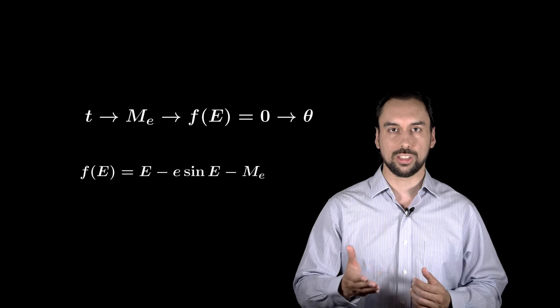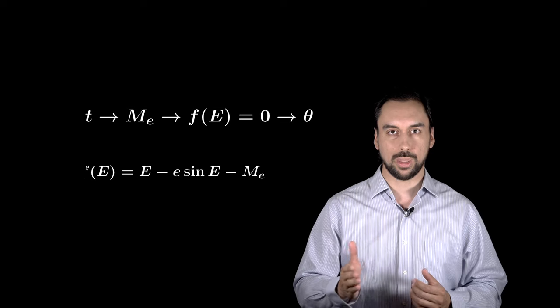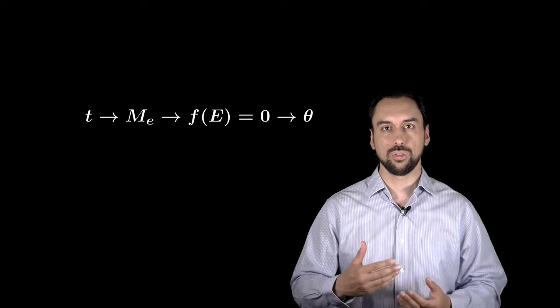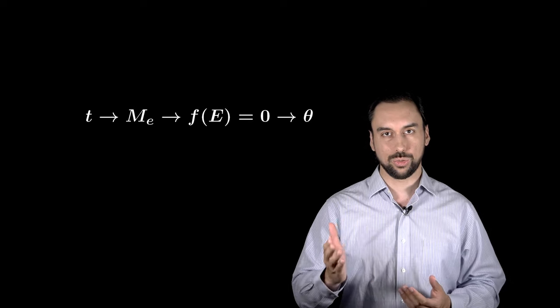To do this, you can use an iterative process like Newton's method. And after you get some degree of precision for the eccentric anomaly, you can obtain directly the true anomaly.